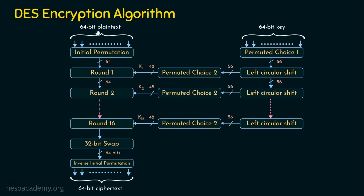So the 64-bit plaintext is converted into 64-bit ciphertext. There are 16 rounds, and for each round we need round keys of 48 bits. K1 is the round key for round 1 (48 bits), K2 is the round key for round 2 (48 bits), and likewise K16 is the round key for round 16 (48 bits). The encryption algorithm starts with a 64-bit key, which is converted to 56 bits, and this 56-bit key is used to generate the 48-bit round keys. So the key length is 56 bits in DES.